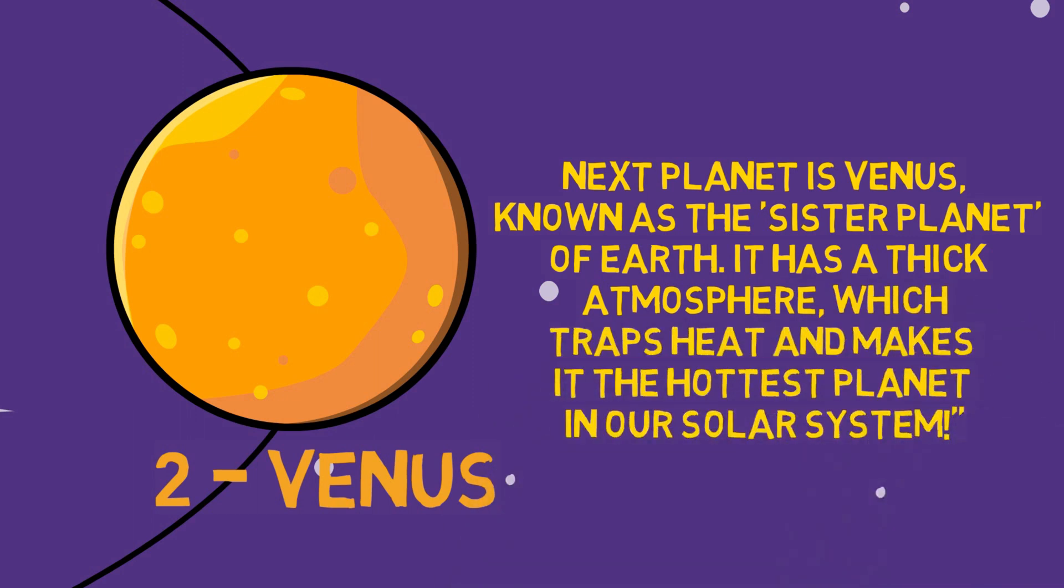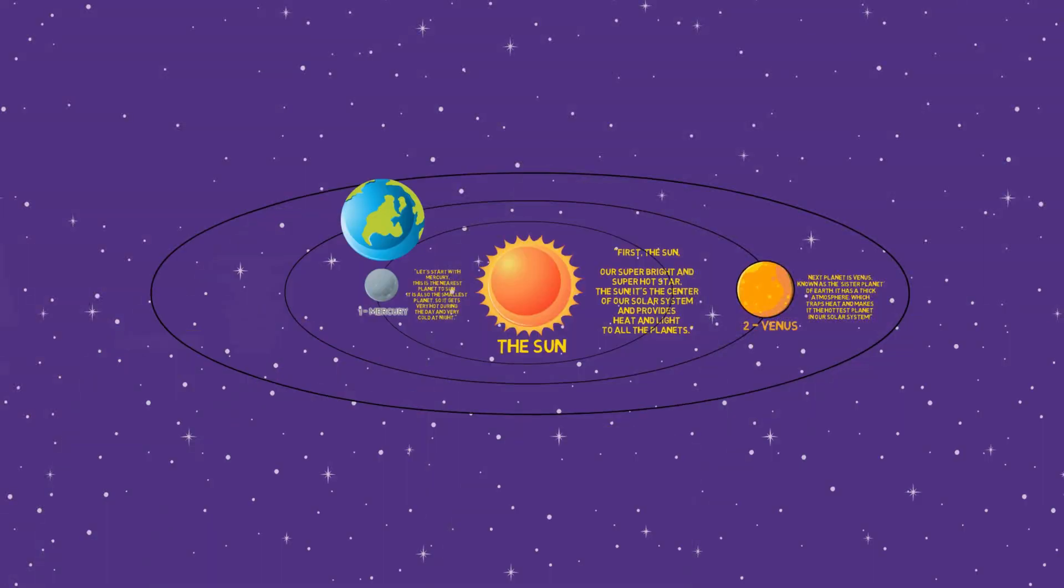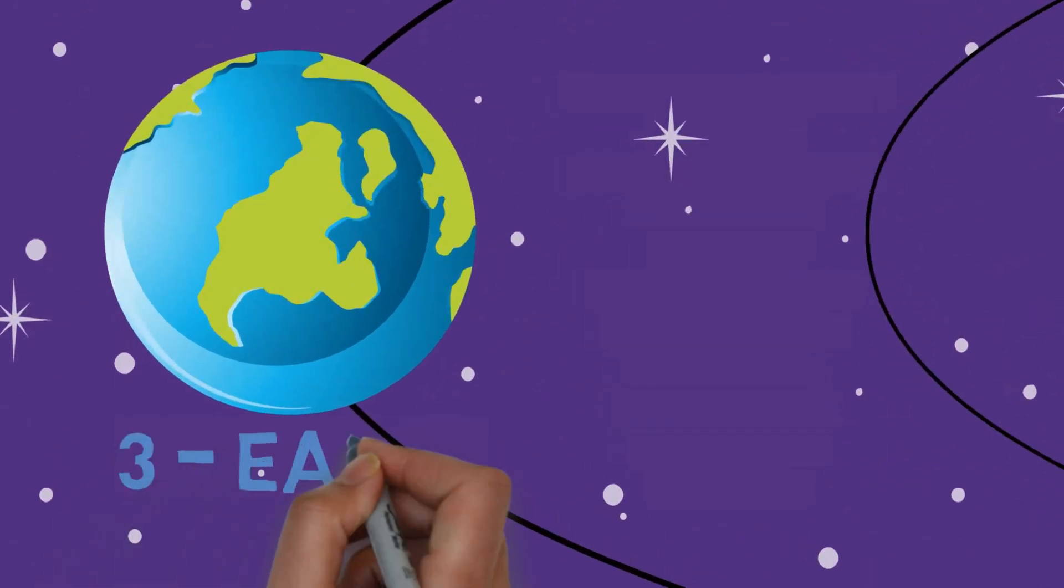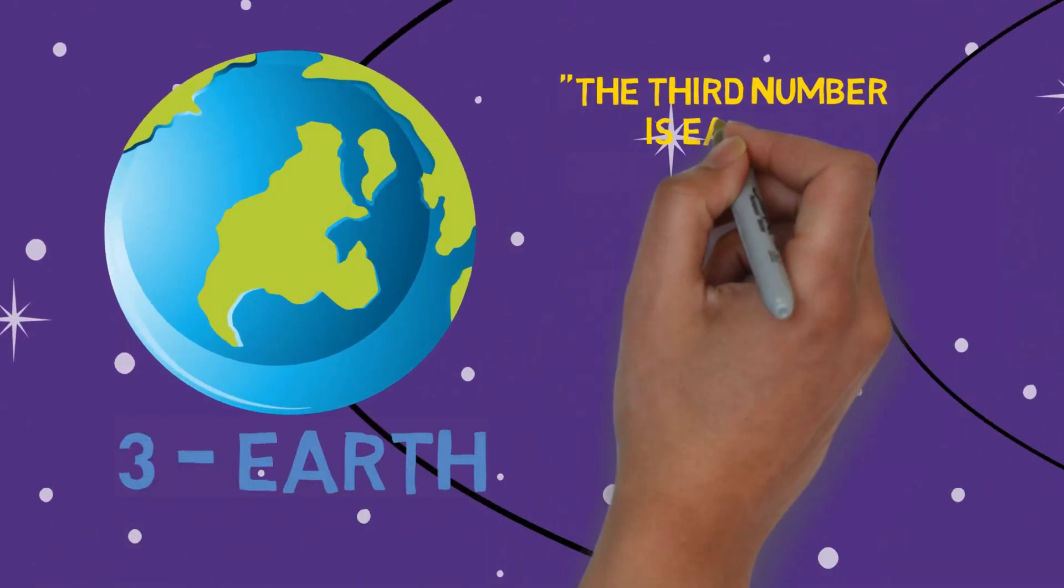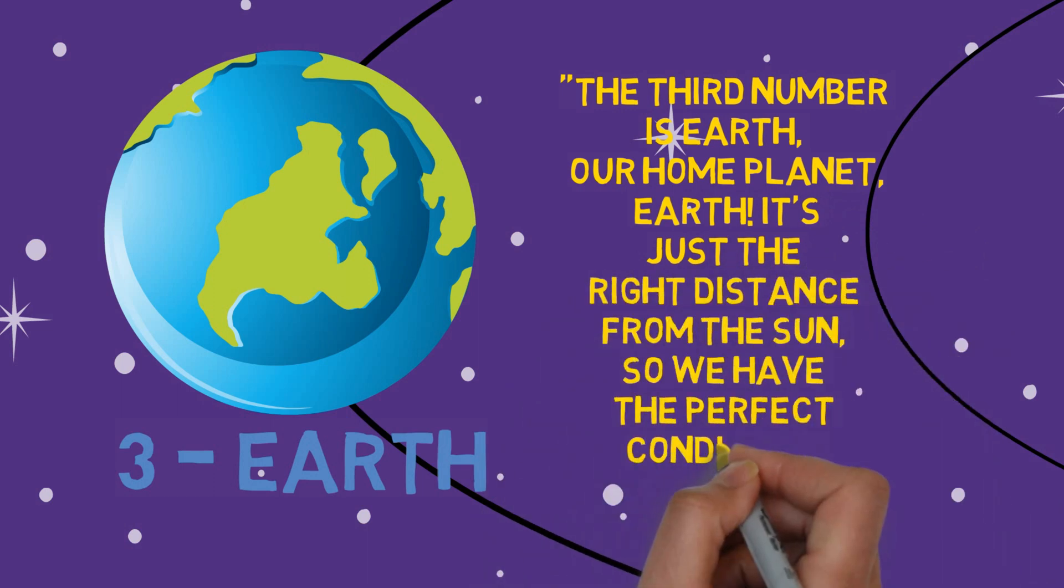The third number is Earth - our home planet! It's just the right distance from the sun, so we have the perfect conditions for life.